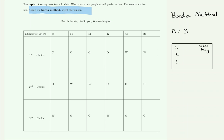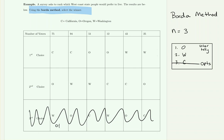Imagine voters filled out a form ranking California, Oregon, and Washington. Someone who prefers Oregon first, then Washington, still has to fill in California as last even if they don't want it at all. For this reason, in the Borda method last place always receives zero points. With three choices, third place is last, so you can mark those all as zero and not worry about them.